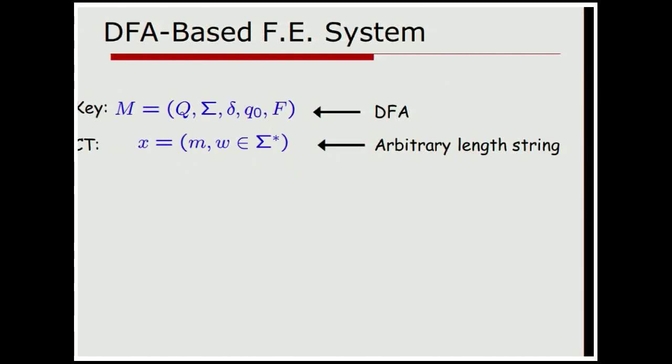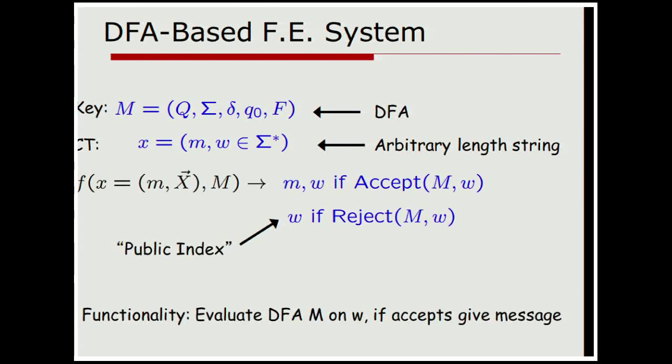Okay. So to kind of initiate this study, I'm going to do what I call a DFA-based functional encryption system. And here, the key will be, this key will be associated with the description of a DFA. A ciphertext will be associated with a hidden message M that, you know, we're going to try to hide and an arbitrary length string W, or arbitrary length string W. And the semantics that we're going to want are going to be pretty analogous to the KPABE, that is, if the machine associated with your DFA accepts W, then you should get to learn this message small m. If not, you shouldn't be able to learn what the message is. So basically, this is that written down. Again, we're going to be in the public index model where, kind of like a lot of forms of IBE, we're going to just assume that W is given away in the clear.